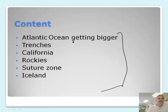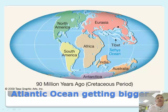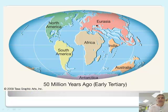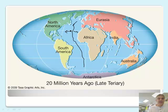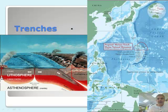Let's talk about how the Atlantic Ocean is getting bigger. This is 90 million years ago — you might notice that Eurasia and North America were almost touching, same with South America and Africa. At 50 million years, the gap has gotten bigger. It's because the continents are drifting. Right down through the middle is a divergent plate boundary, meaning this plate is moving this way and this plate is moving that way, pushing them apart.